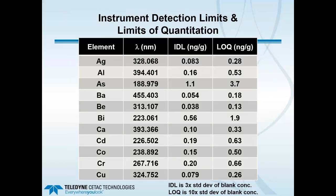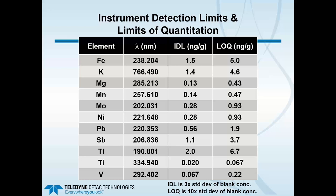Looking at instrument detection limits and limits of quantitation for 22 elements: the IDL is defined as 3 times the standard deviation of the blank concentration in NAFTA, and the LOQ is 10 times the standard deviation of the blank. We can achieve quite low levels — well sub-nanogram per gram or single-digit nanogram per gram, depending upon the element. Elements of particular interest, including cadmium, arsenic, lead, antimony, and thallium, are covered across the range from silver to vanadium.